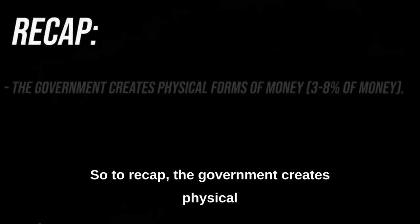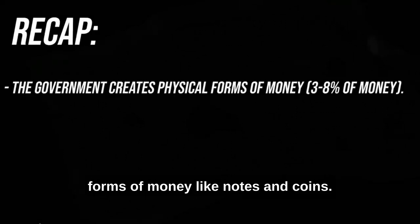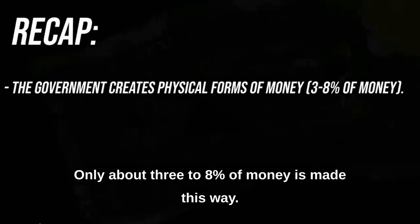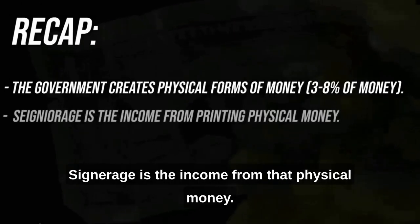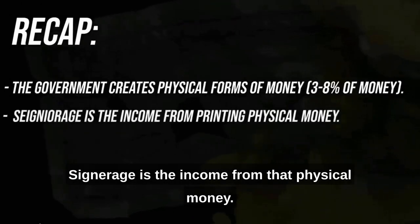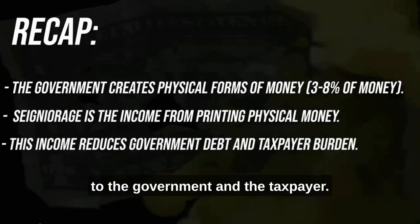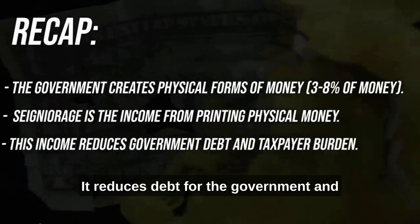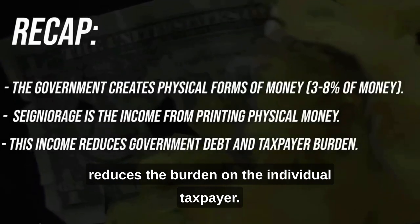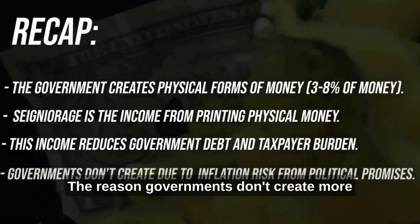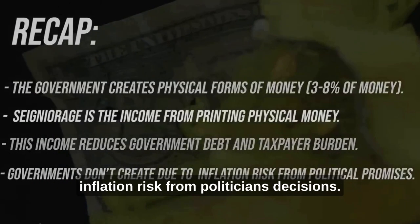To recap: the government creates physical forms of money like notes and coins, and only about three to eight percent of money is made this way. Seigniorage is the income from that physical money — this income is both a benefit to the government and the taxpayer, as it reduces debt for the government and reduces the burden on the individual taxpayer. The reason governments don't create more of this money is because of the inflation risk from politicians' decisions.